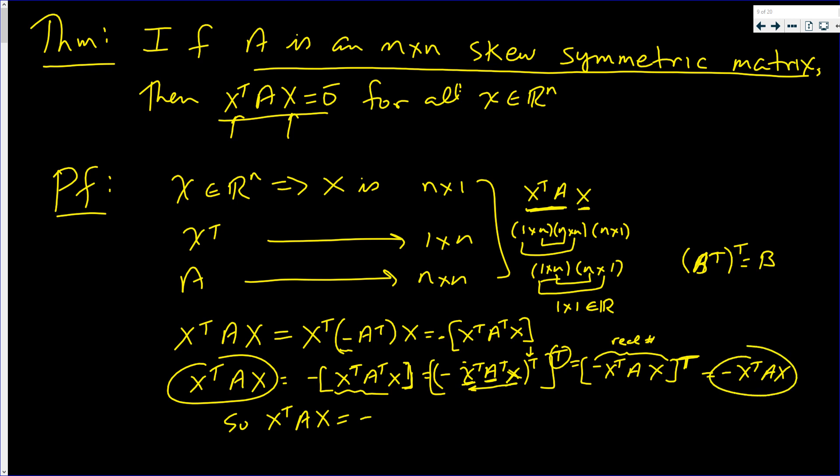So this x transpose A x is equal, it equals to its negative. Now these are real numbers. This is a real number. Why? Because it's a one by one matrix. If two equal numbers differ by signs, they better be zero. Now seven equals negative seven is not true. Negative three equals to negative negative three is not true.